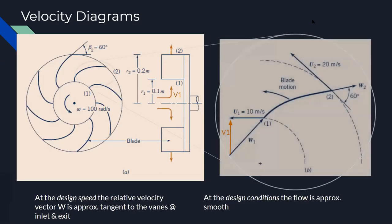One of the ways in which we analyze these is velocity diagrams. At the design speed and design conditions, the flow is going to be smooth. The relative velocity w, we're going to assume, is tangent at the inlet and outlet. We also have the vector velocity of the blade itself, which is u, and that's always going to be circumferential.